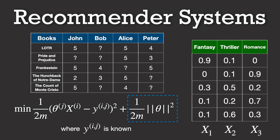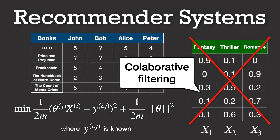And voilà — there we have it, the content-based recommender system explained very briefly. In the next video, we'll explore collaborative filtering, where the emphasis shifts from the content of the books to the relationships and similarities between different user tastes. I hope this video gave you a better understanding of the fundamentals of content-based recommendations, and please hit the like button if you found this explanation helpful. See you in the next one!